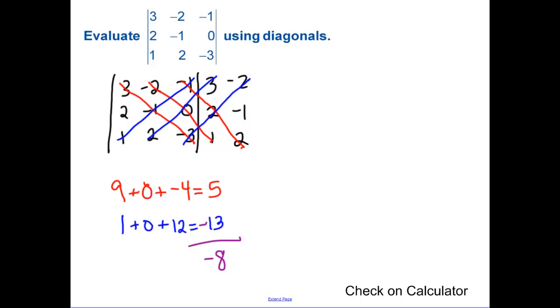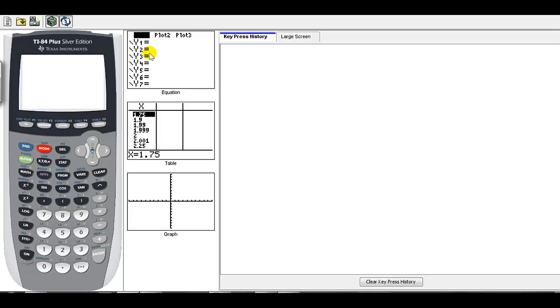Now I'm going to show you how to check this on your calculator. I still want you to do it by hand, but this is a good way to check. In this key press history area, pay attention to the steps you're going to write. The matrices function is 2nd and then x to the negative 1.